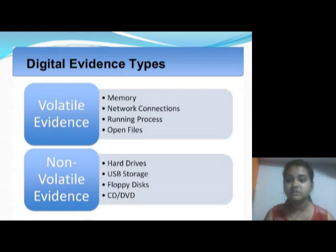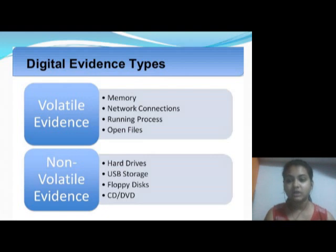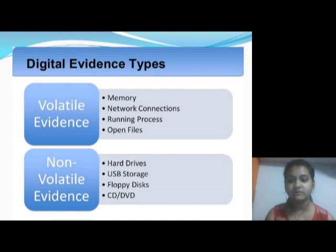Digital evidence types can be summarized as follows. Volatile evidence includes memory, network connections, running processes, and open files. Non-volatile evidence includes hard drives, USB storage, floppy disks, CDs, and DVDs.